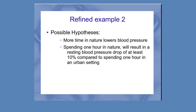I'm going to hypothesize that spending one hour in nature will result in a resting blood pressure drop of at least 10 percent compared to spending one hour in an urban setting. And depending on what you get from that, you have to consider very carefully, how did I control my experiment? Did I measure the same person at the same time of day? What were they doing in nature versus what were they doing in an urban setting? And make sure that our experiment is really well designed to be able to measure those things.